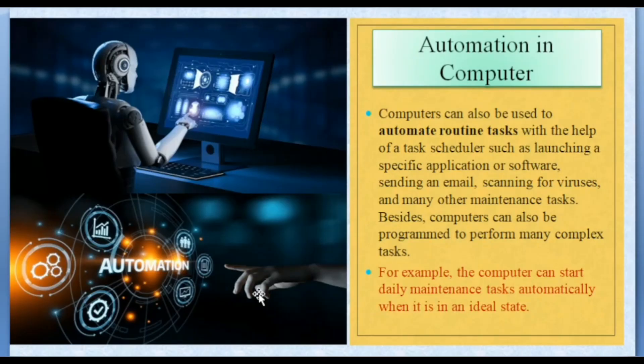Next is automation in computer. Computers can also be programmed to automate routine tasks with the help of task scheduler. This includes launching specific applications or software, sending emails, scanning for viruses, and other maintenance tasks. Computers can perform complex tasks also such as software updates, security scanning, and system diagnostics automatically. Automation in computer is a domain which is continuously evolved and developed day by day, and we are getting much more advanced computers in near future.